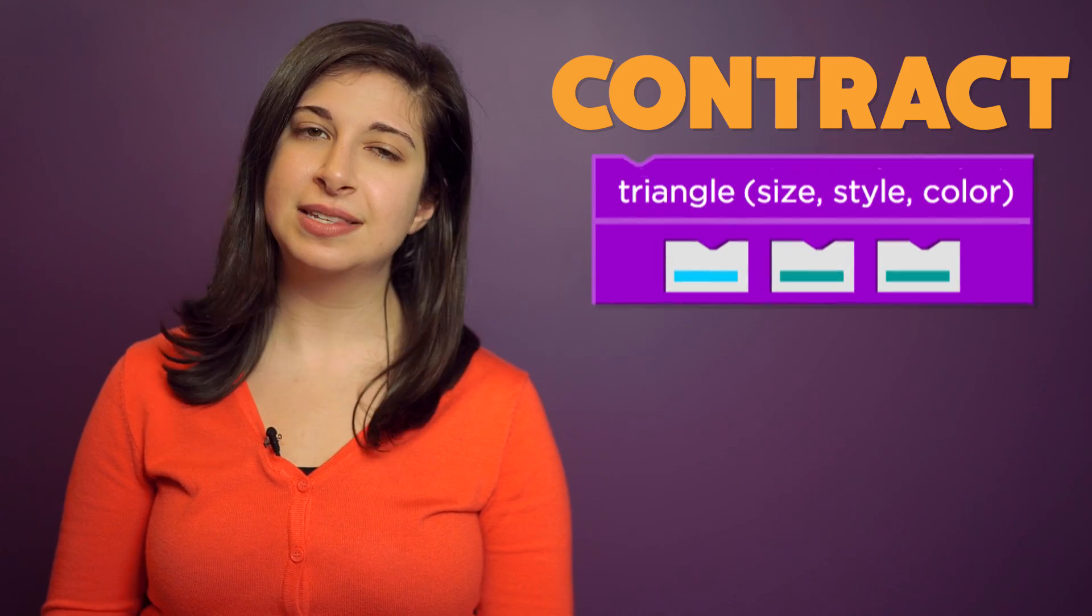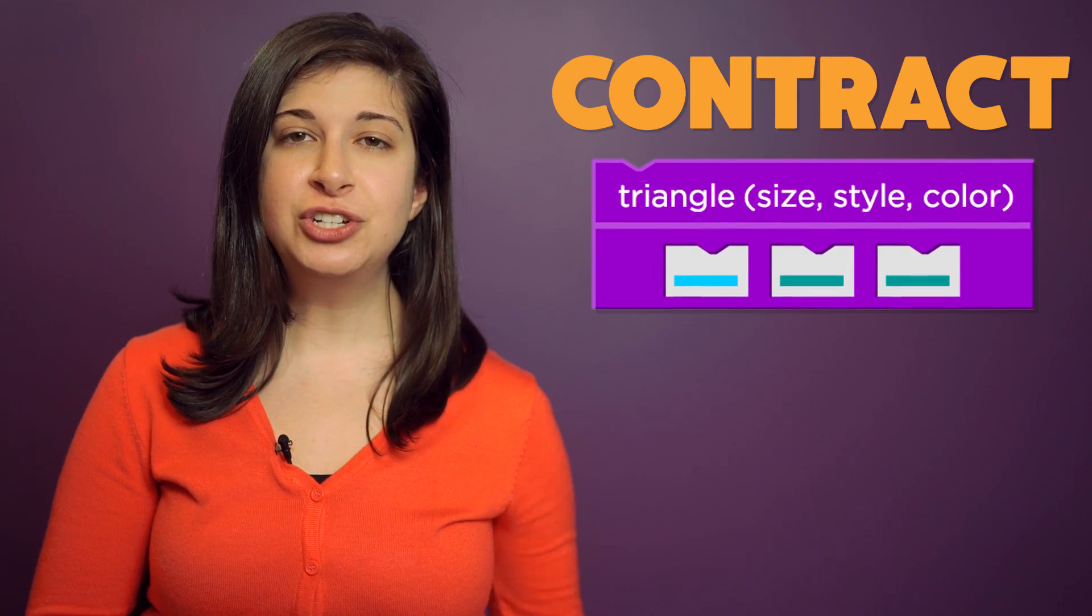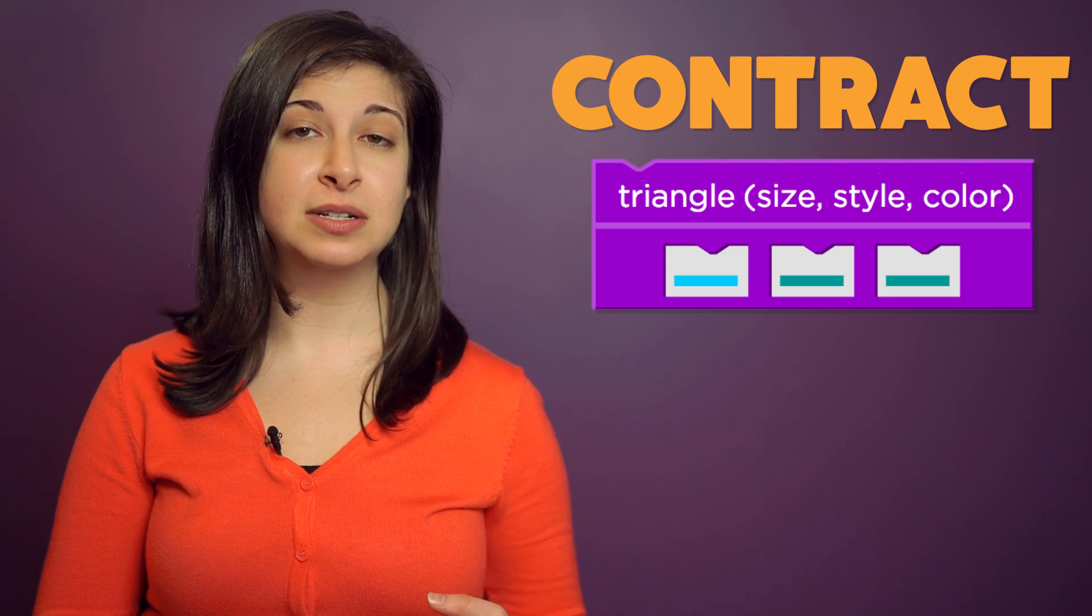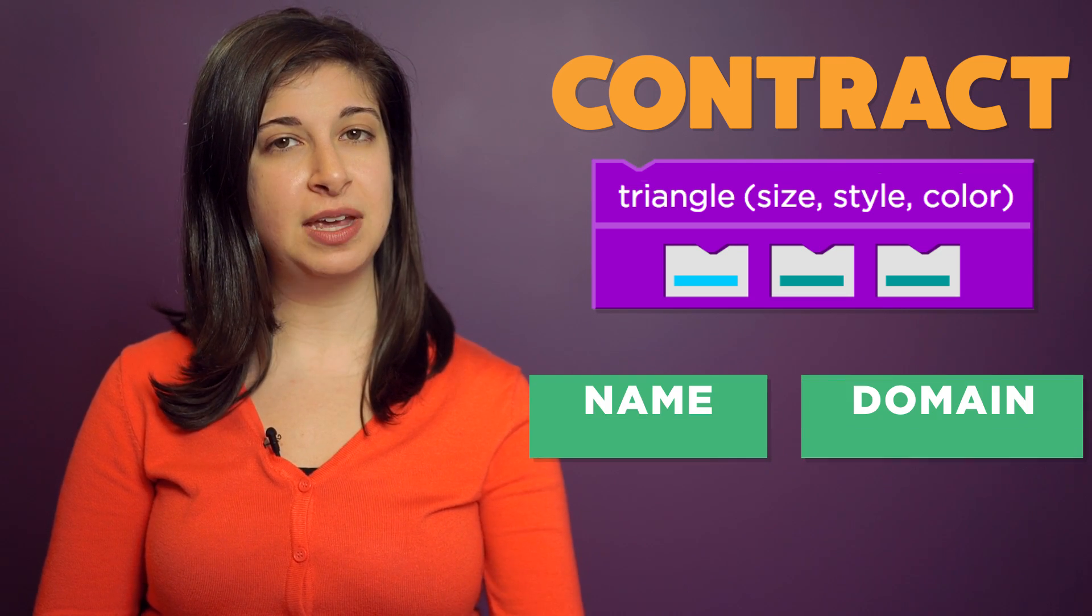Let's use the triangle function as an example. Each contract is made up of three parts: the name, the domain, and the range.